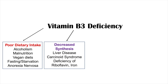The second category of causes is decreased synthesis. We need both dietary intake of niacin and synthesis from tryptophan to maintain adequate vitamin B3 levels. One cause is liver disease, since tryptophan is processed into niacin in the liver — any disruption to liver function can impair this process.